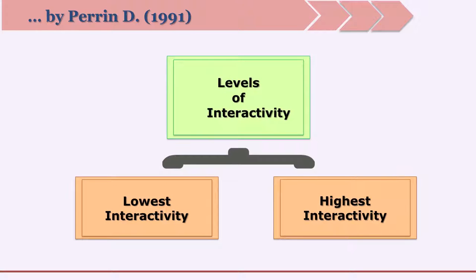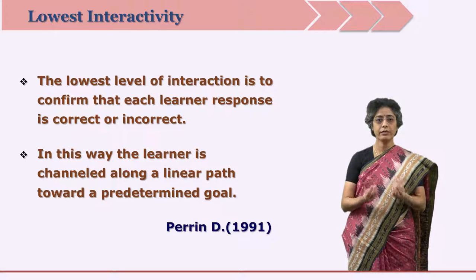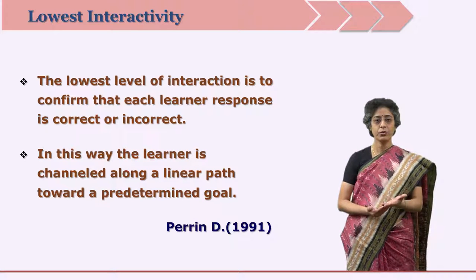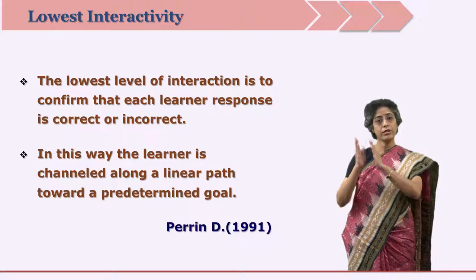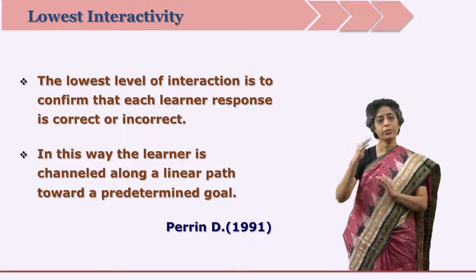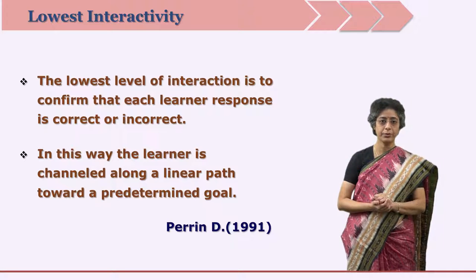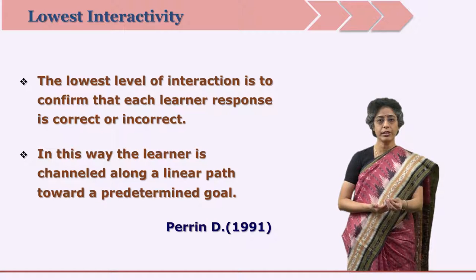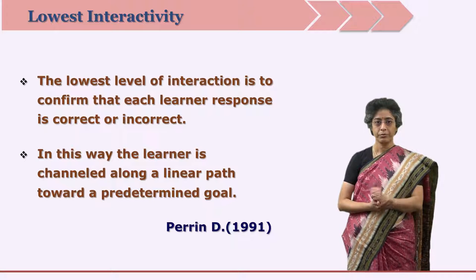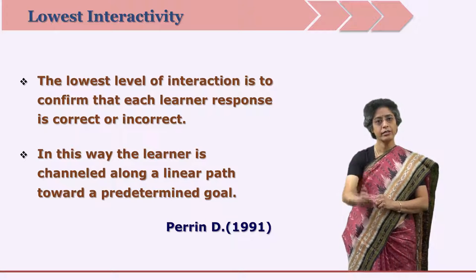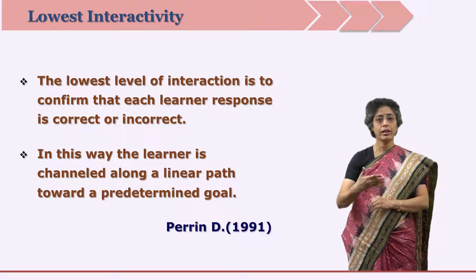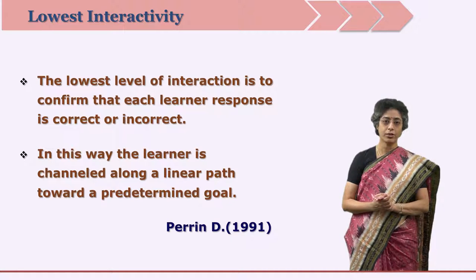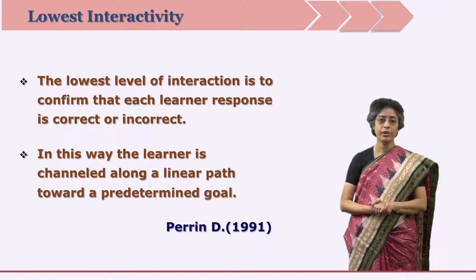Dr. Perrine Donald has defined two levels of interactivity: lowest interactivity and highest interactivity. When a learner is given some questions just to choose correct or incorrect, when the goals are set and learners interact with the material in terms of answering questions — correct, incorrect, yes or no — the learner moves linearly. This linear path leads the learner towards the set objectives. This can be the lowest level of interactivity.